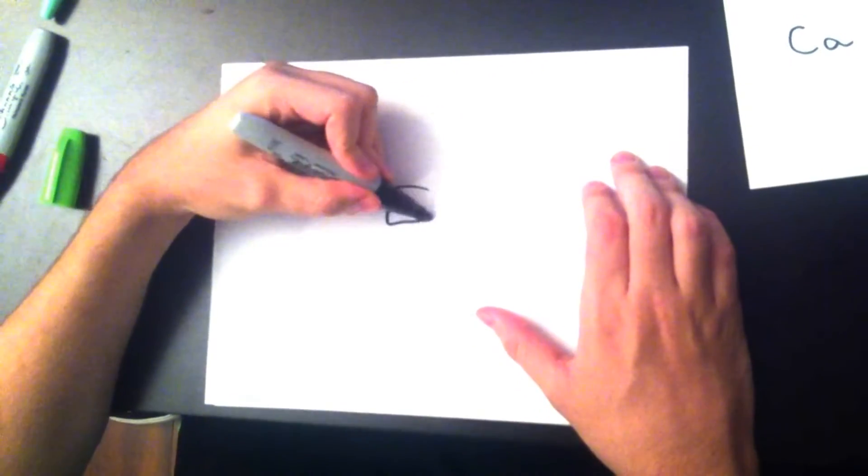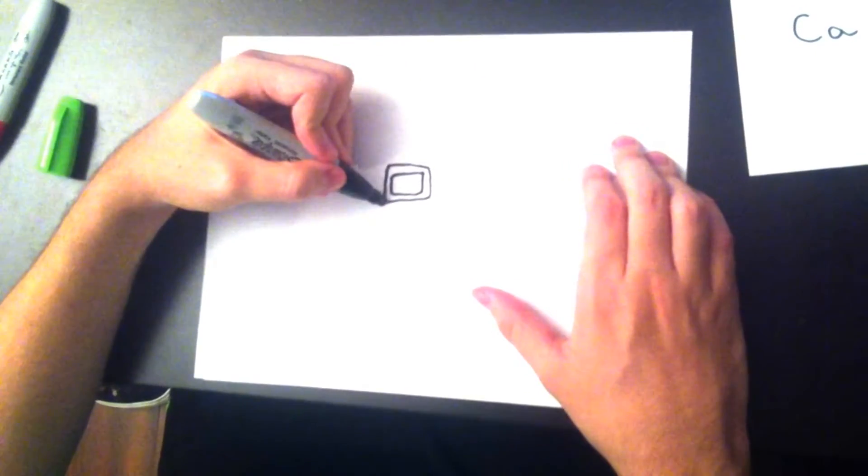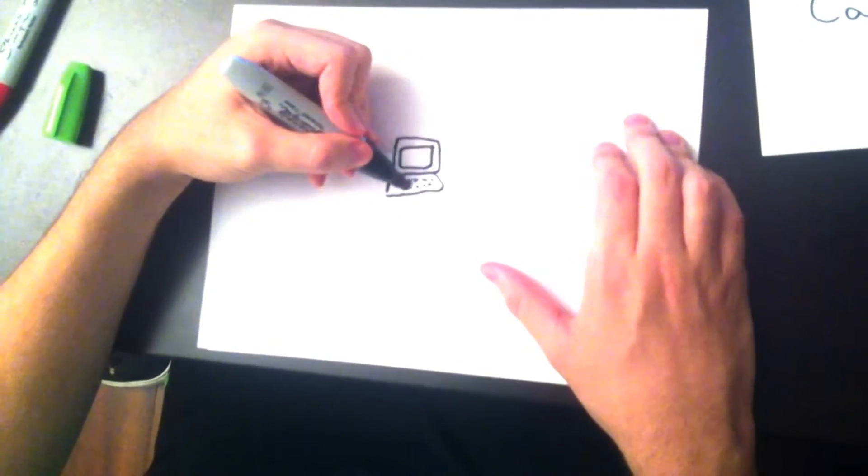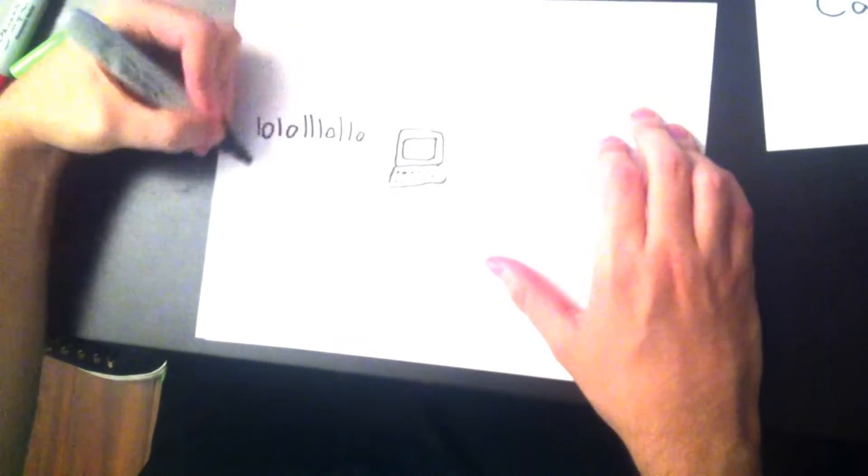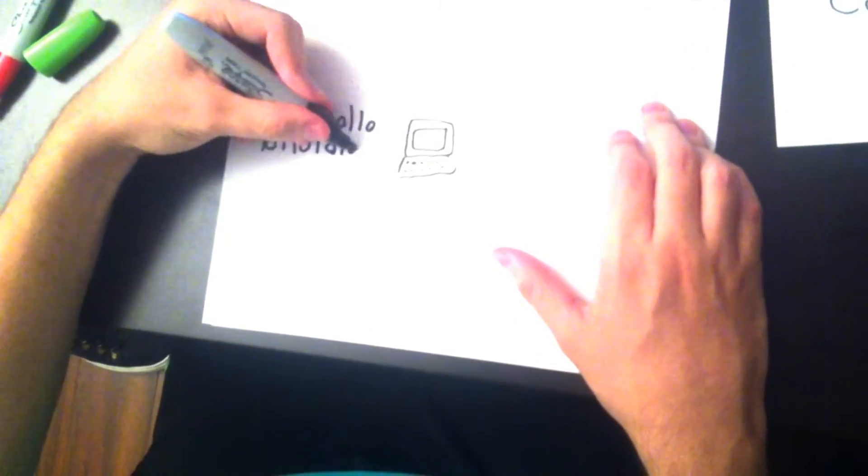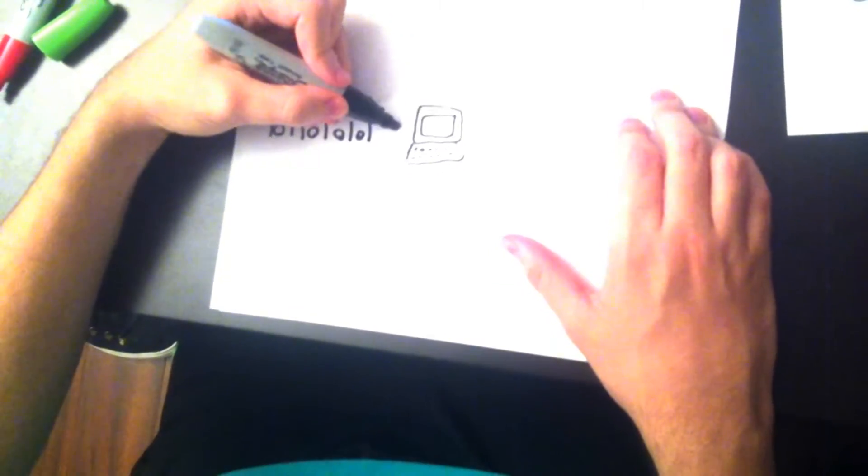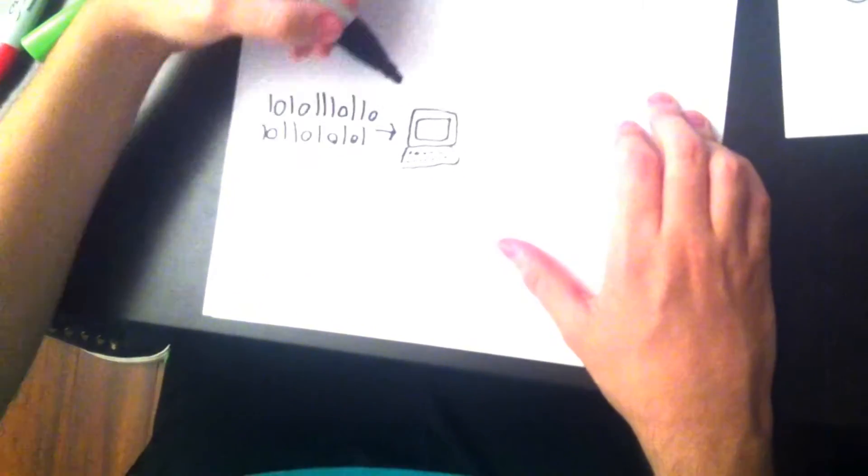The conversion from the description to the thing is called computation. For example, digital computers, like the one you're using right now, take descriptions called programs and convert them to things like sounds, images, texts, and even 3D models. They compute things from descriptions, from the programs.